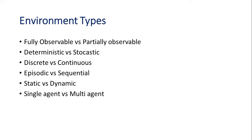To summarize so far: fully observable means the environment is completely accessible to you; partially observable means it is not. Deterministic means you can predict the next move; stochastic means it keeps changing. Discrete means a finite number of moves within a bounded space; continuous means the environment varies at each step. Episodic means history of past events affects the current scenario; sequential means the present action affects the next one.